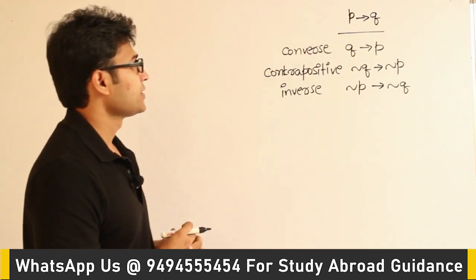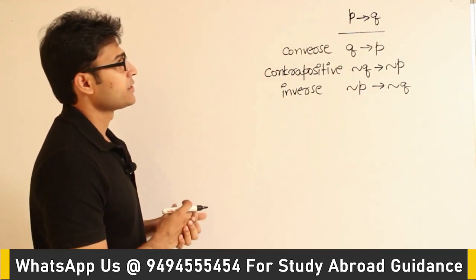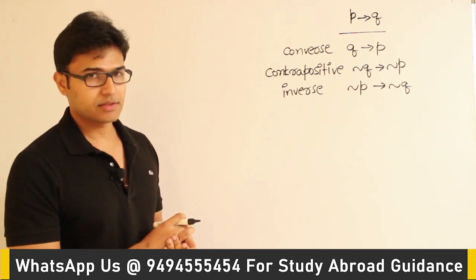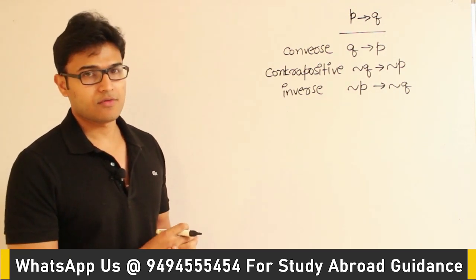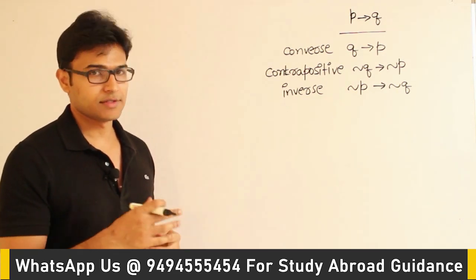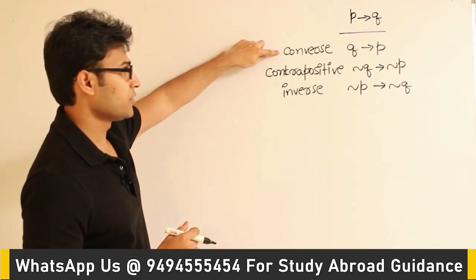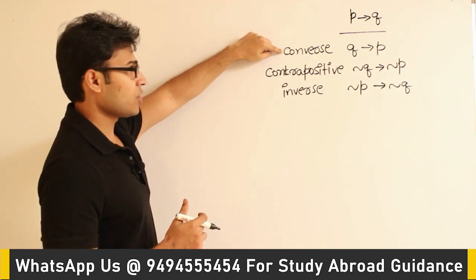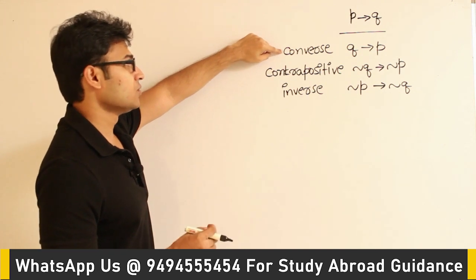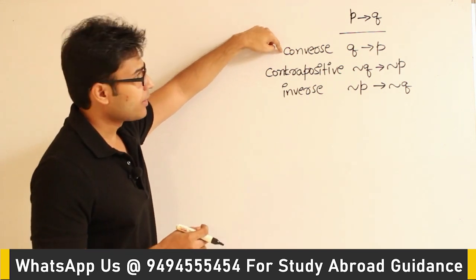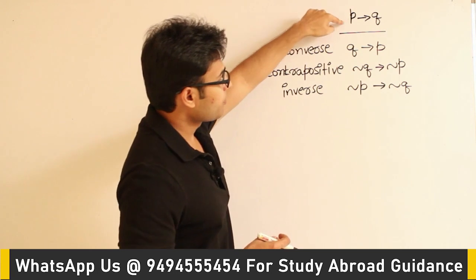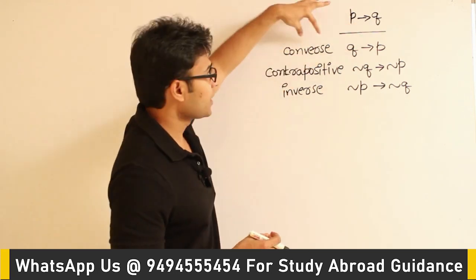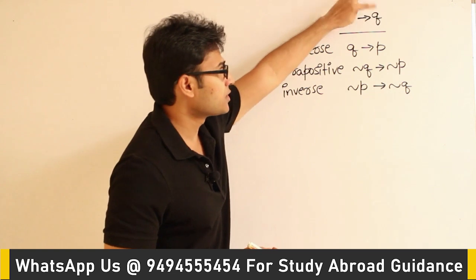If you have any conditional statement of type P implies Q, then from this conditional statement we can derive three types of conditional statements. One is called converse. If you are able to identify what is P and what is Q in the given conditional statement, and if you change it from P implies Q to Q implies P, that is called the converse of the given statement.